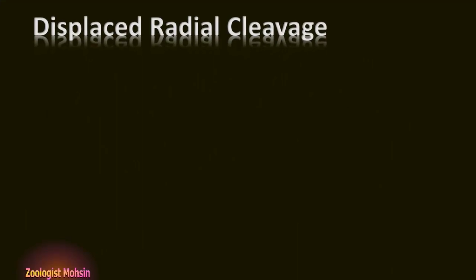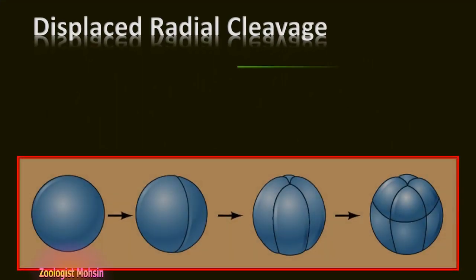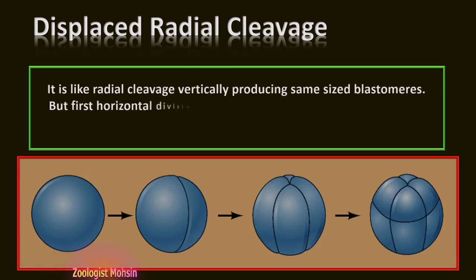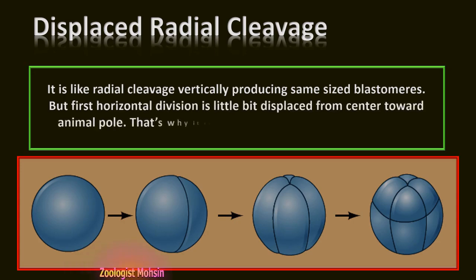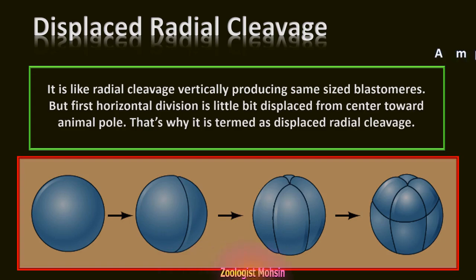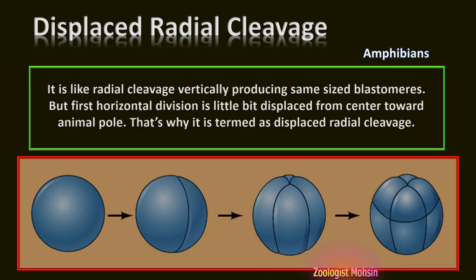Displaced radial cleavage: It is like radial cleavage, producing same-sized blastomeres vertically, but the first horizontal division is slightly displaced from the center toward the animal pole. That is why it is termed displaced radial cleavage. This is unique to amphibians only. In the diagram, you can observe the horizontal cleavage slightly displaced to the upper side, making two layers of unequal-sized blastomeres.